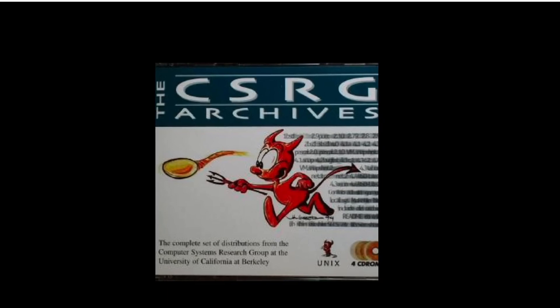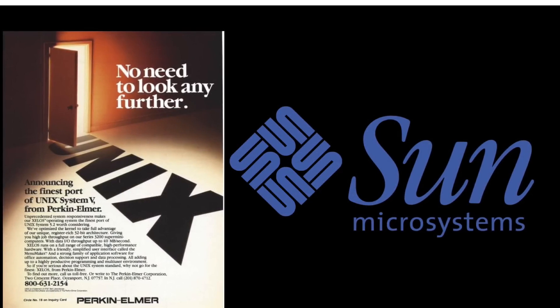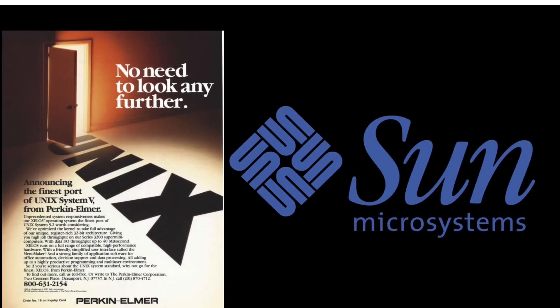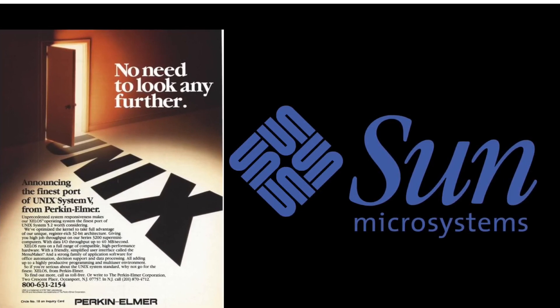Despite its power, Unix had a major flaw. It was proprietary. AT&T controlled its development, and licensing costs were high and restrictive. This pushed researchers to look for alternatives.